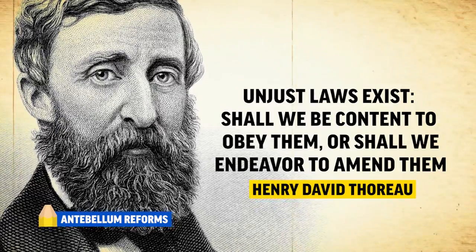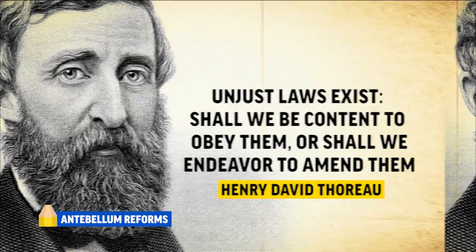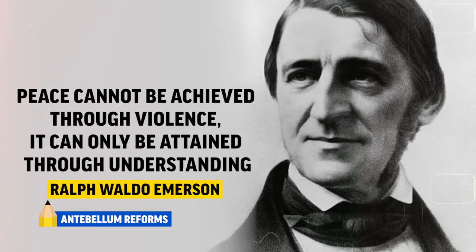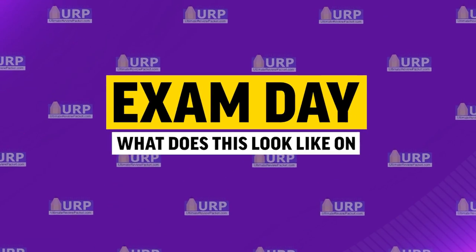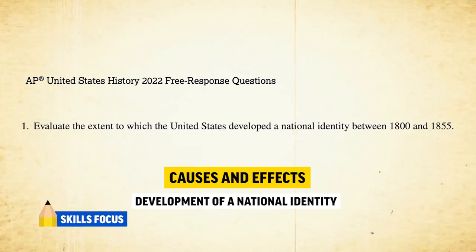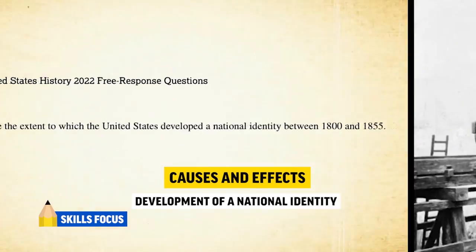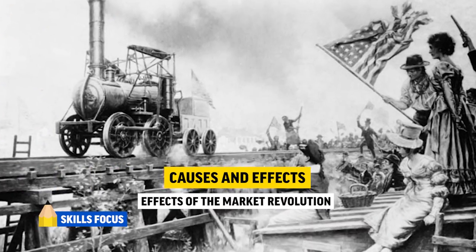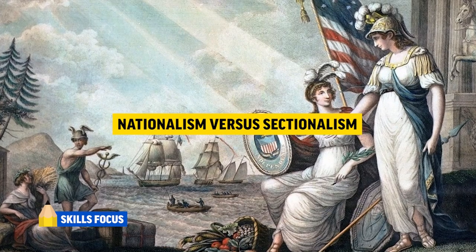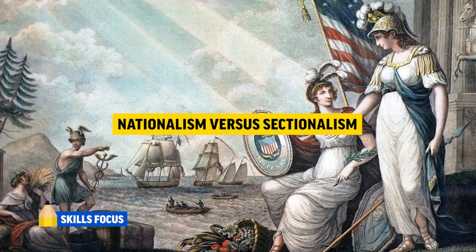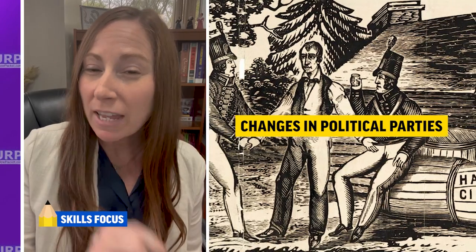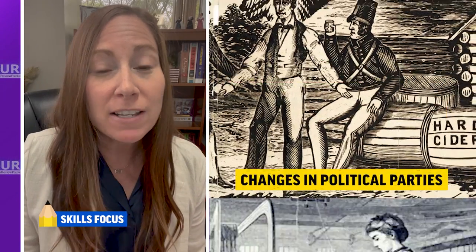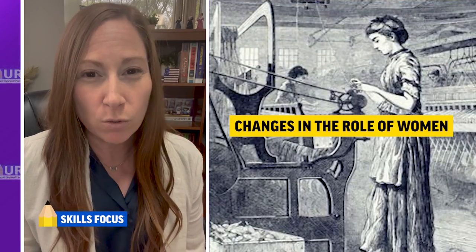Transcendentalists like Henry David Thoreau called for civil disobedience, and Ralph Waldo Emerson wrote about the truth found in nature. On exam day, for causation you could be asked about the development of a national identity or the effects of the Market Revolution. Comparison questions will center around nationalism versus sectionalism or the differences in various reform movements. For continuity and change over time, you will likely see questions about changes in political parties or changes in the role of women.